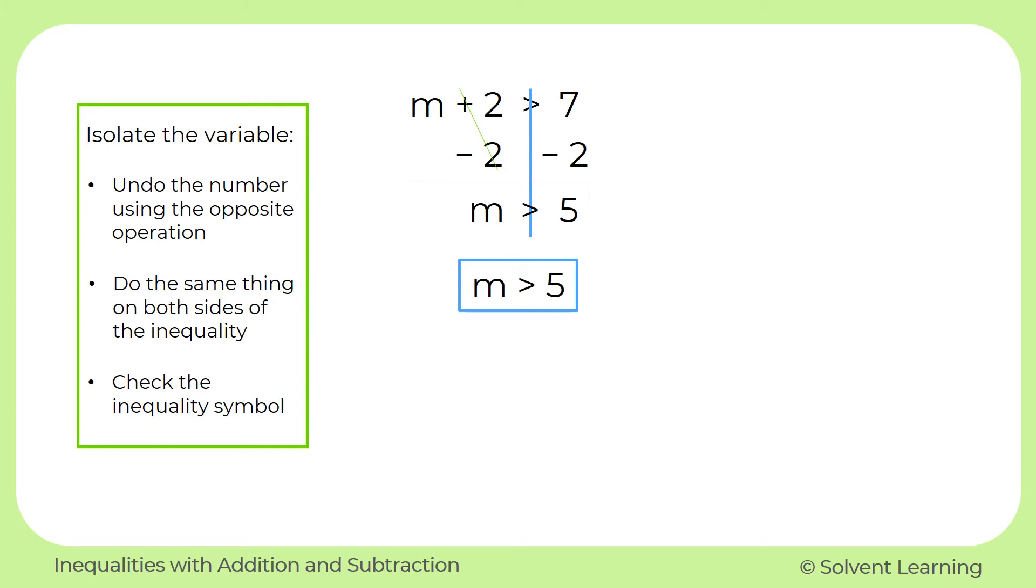And this solution is telling us that m can be any number that's more than 5. It could be 5 and a half. It could be 6. It could be 10. It could be a million. Any number that's greater than 5.